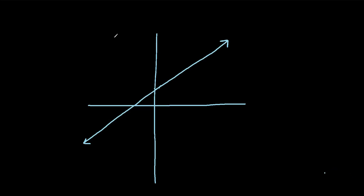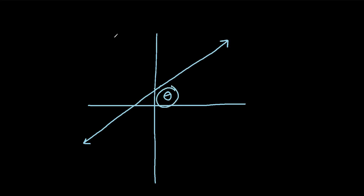In this video, we will talk about how to find the angle of inclination of a line. So let's say we have this line right here, and we want to find the angle of inclination. That's simply the angle between the line and the x-axis. So we could label that as theta. Now often you'll be given the slope of this line and asked to find theta based on the slope.